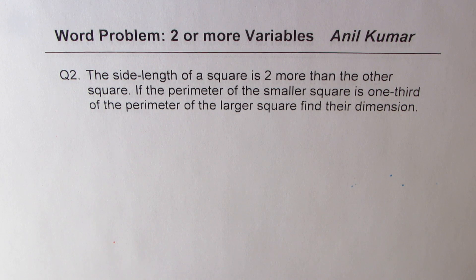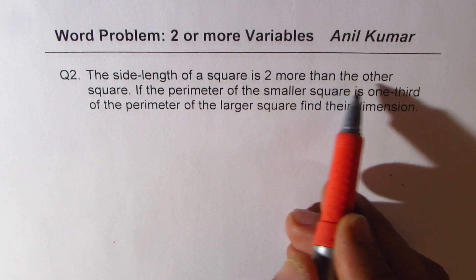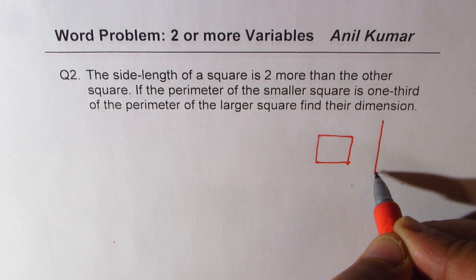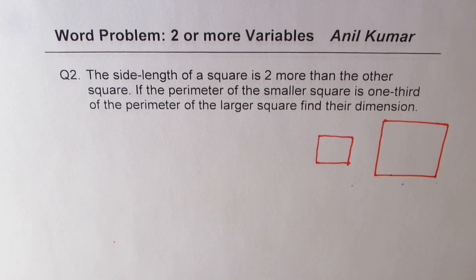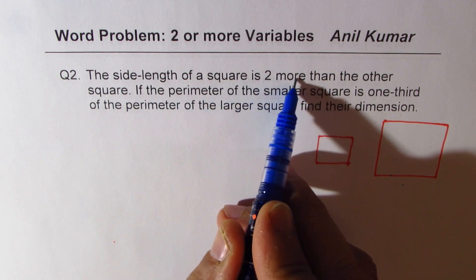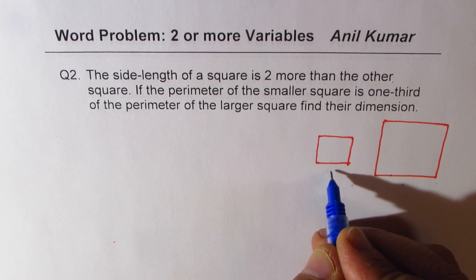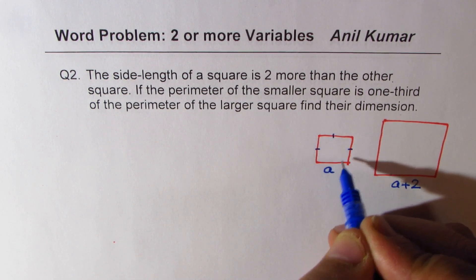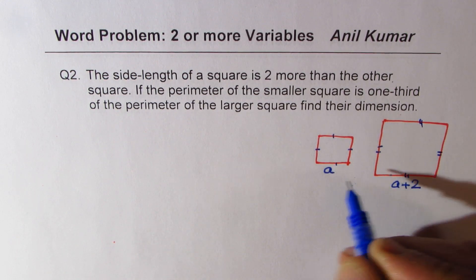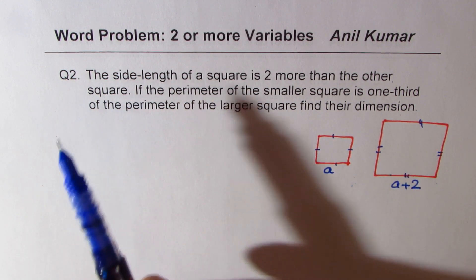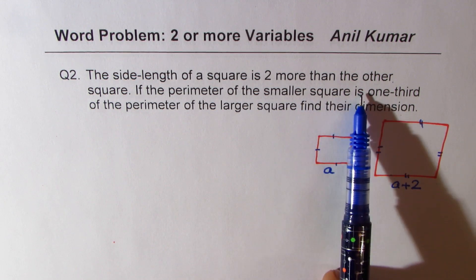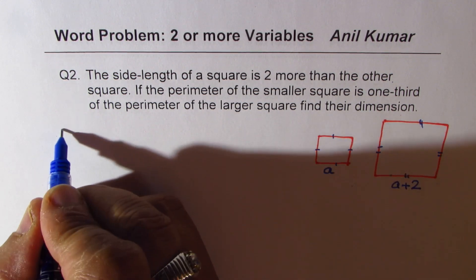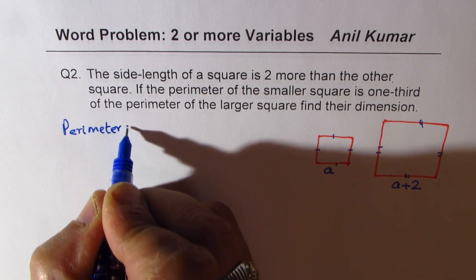Question number two: the side length of a square is two more than the other square, so we're talking about two squares. Let's sketch two squares — a smaller one and a bigger one. If the smaller side is a, then the bigger side becomes a plus 2. In a square, all sides are equal, so all sides are a for the smaller one and a plus 2 for the bigger one. We need to relate perimeter, which is the sum of all sides.